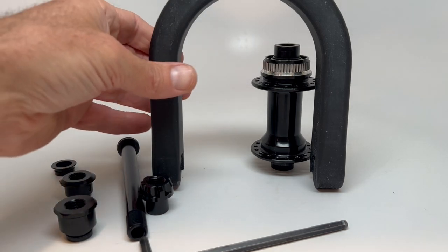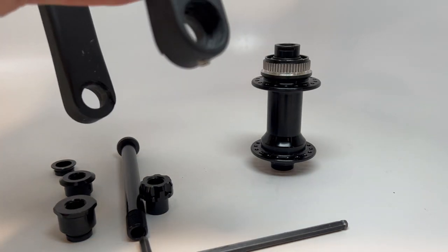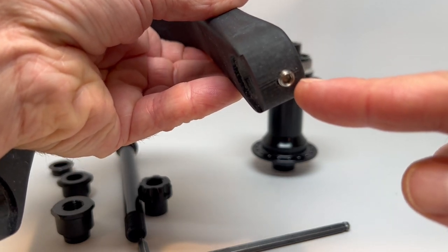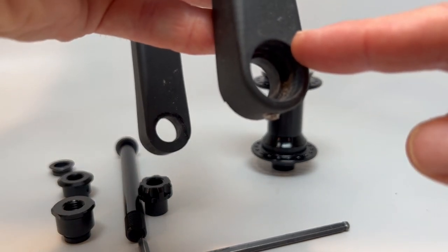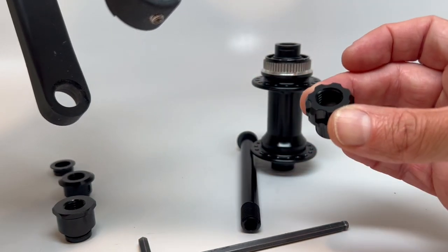First thing you'll want to do is figure out how your current fork holds its threaded insert in place. This will either be through a small set screw on the bottom of the fork end or possibly a screw installed from the outside of the fork as would be the case with a variety of Focus forks.